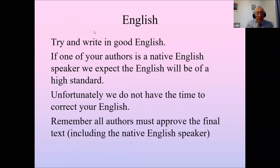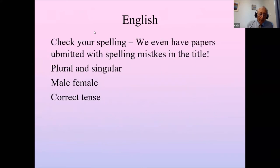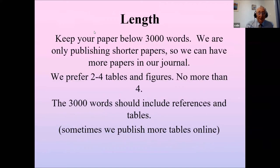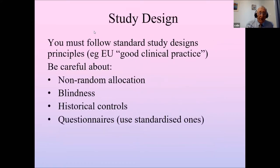Probably the most common reason papers are rejected is because the English is so bad. Try to get your English correct — get a native English speaker to help you write it. Make sure you have no spelling mistakes in the title, and get gender, tense, plural, and singular correct. To improve your English: write a lot, and read a lot. The BBC offers a good free course. Keep your papers below 3,000 words, otherwise we'll reject it.